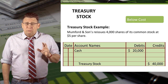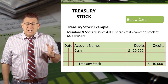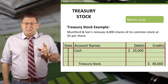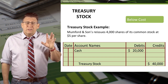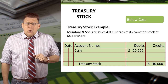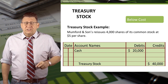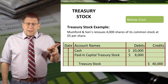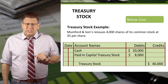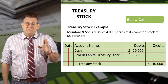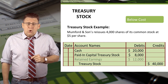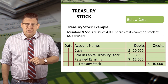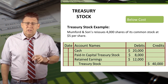Treasury stock can be reissued below cost if a company needs cash or thinks the stock price will drop even further. In this example, Mumford & Sons reissues 4,000 shares of its Treasury stock for $5 per share, which is $5 below its cost. To show the journal entry in stages: we debit cash for $20,000 and credit Treasury stock for $40,000, its cost. This leaves us missing $20,000 of debits. When this happens, the first account we reduce is paid-in capital for Treasury stock. However, we can only debit this account for its available balance, which in this case is $8,000. When there isn't enough balance available in the paid-in capital for Treasury stock account, the remaining amount needs to come from retained earnings. So retained earnings needs to be debited $12,000 to make the journal entry balance.